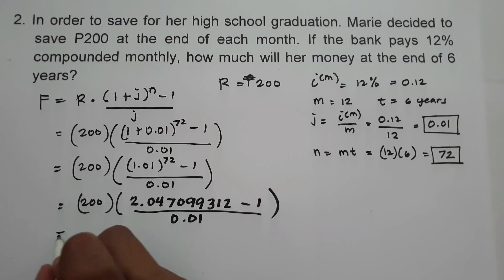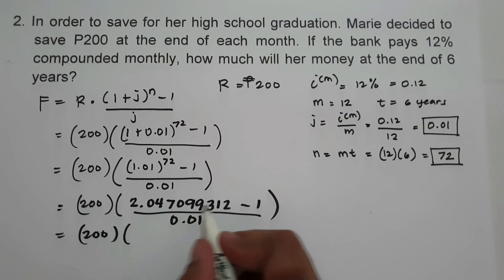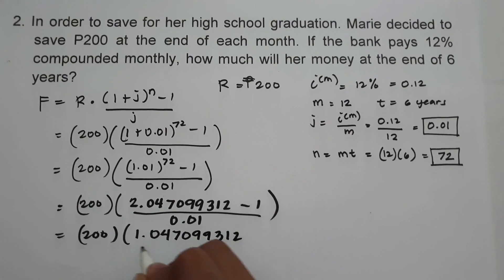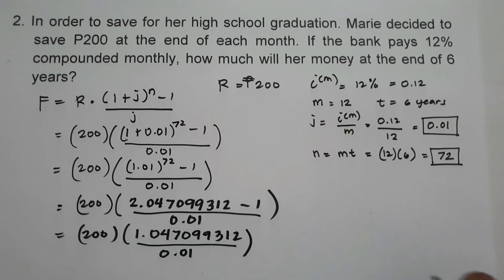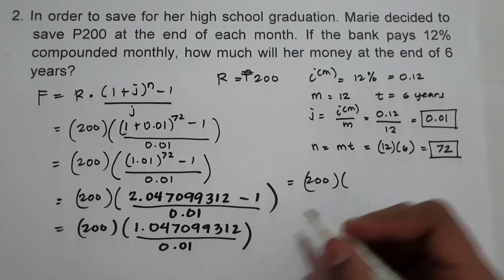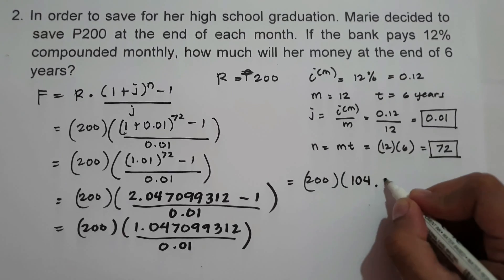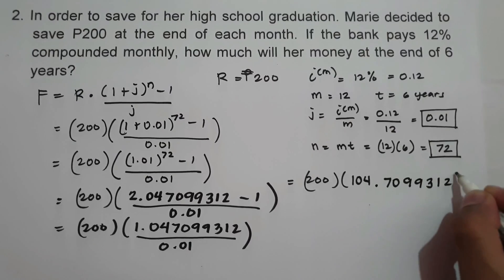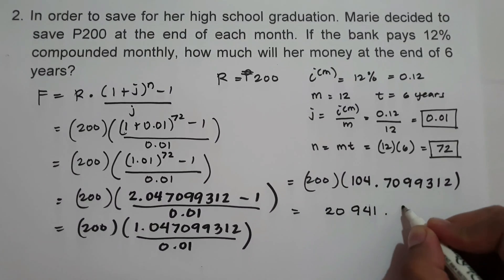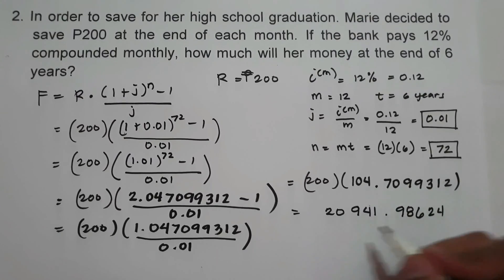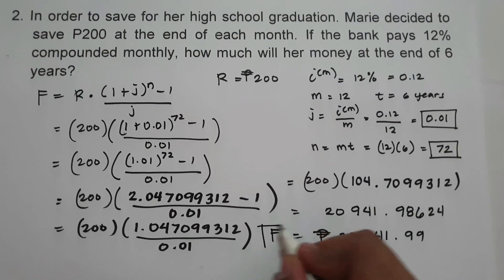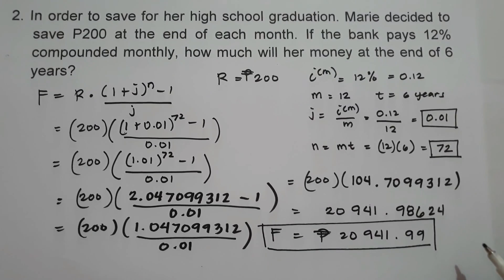Subtracting gives 1.047099312, divided by 0.01 equals 104.7099312. Multiplying by 200 gives 20,941.98624, which we round to 20,941.99 pesos. This will be the amount of money at the end of 6 years.